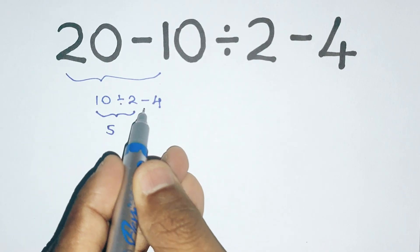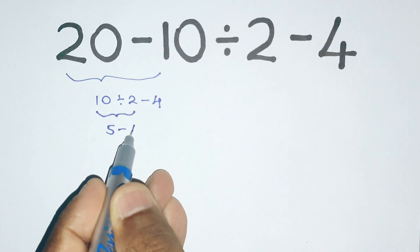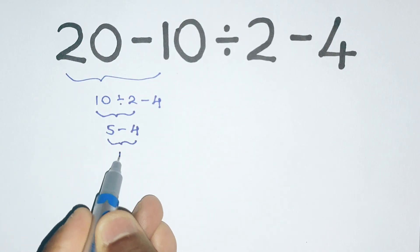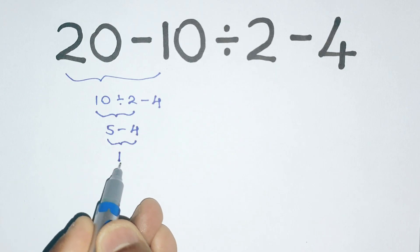And now we still have this minus 4 here. So finally 5 minus 4 equals 1. So they end up with an answer of 1. But that's incorrect.